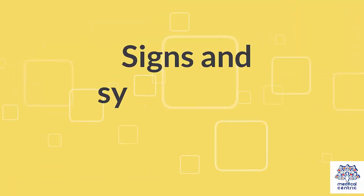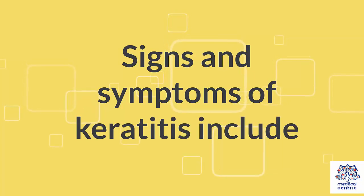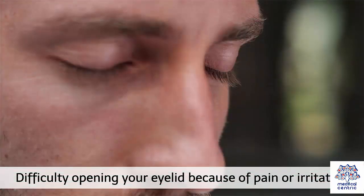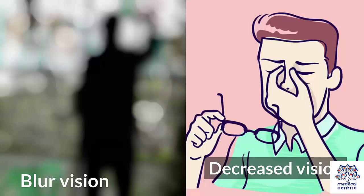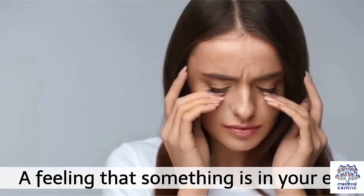Signs and symptoms of keratitis include eye redness, eye pain, excess tears or other discharge from your eye, difficulty opening your eyelid because of pain or irritation, blurred vision, decreased vision, sensitivity to light or photophobia, and a feeling that something is in your eye.